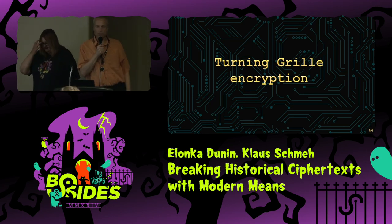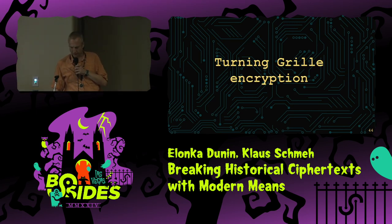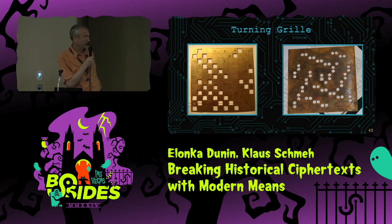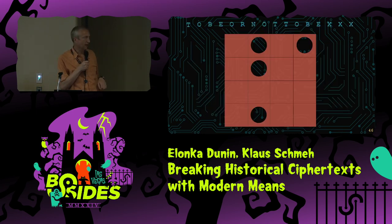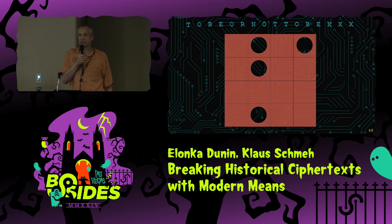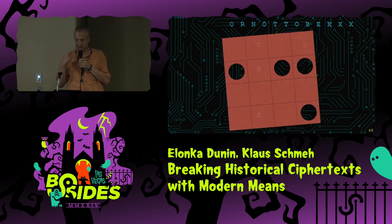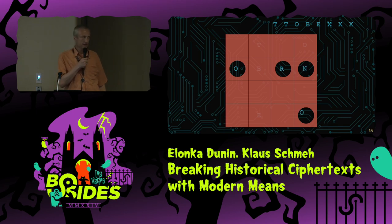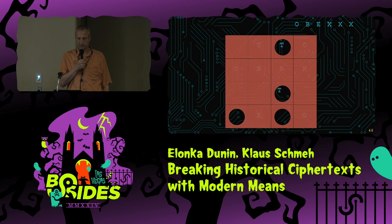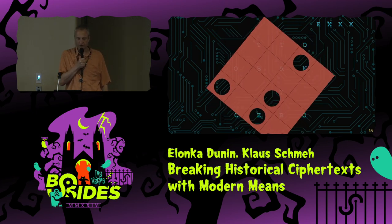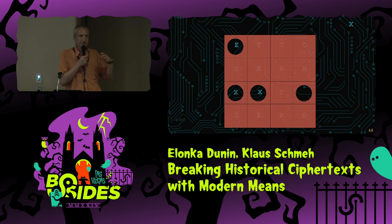Let's look at the so-called turning grill encryption. Most of you have seen this before. These are original turning grills from the 19th or even the 18th century. First, we need a plaintext — 'to be or not to be' — with padding added. We write this plaintext into the stencil starting with the first four holes, then turn the stencil 90 degrees and insert the next four letters. It's a transposition encryption — nothing is replaced, only the order of letters is changed.